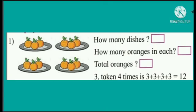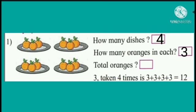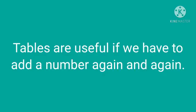Now here children, look at this picture. How many dishes? Four. How many oranges in each? Three oranges. Total oranges — twelve. So three taken four times: three plus three plus three plus three is equal to twelve. Tables are useful when we have to add a number again and again.